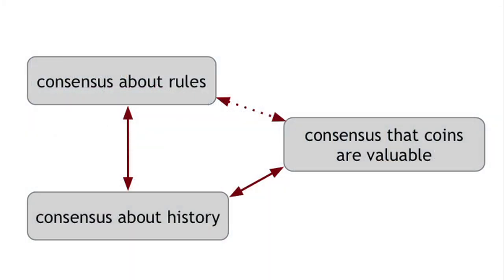We have all three forms of consensus tied together, such that if any one of them failed, the others would fall apart as well. The genius of Bitcoin's original design was in recognizing that it would be very difficult to get any one of these forms of consensus by itself — consensus about rules in a worldwide decentralized environment, consensus about history as a distributed consensus data structure problem, and consensus that some cryptocurrency has value. What the designer of Bitcoin shows is that even if you can't build any one of these by itself, you can stand up all three together and get them to operate in an interdependent way.